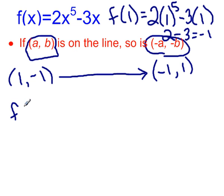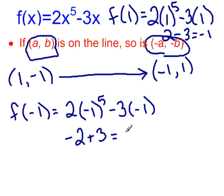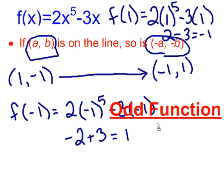So I'm going to check f(-1). As I simplify, a negative raised to an odd power gives me back a negative, so that's -2. Then a negative times a negative gives me a positive 3 on the other side. Negative 2 plus 3 gives me a positive 1. So when I put in -1 for x, I get back positive 1, and that means my function is, in fact, odd.